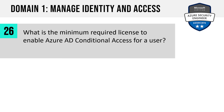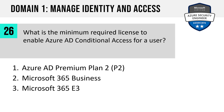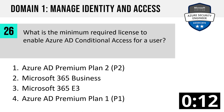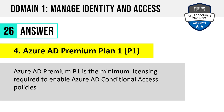Question 26. What is the minimum required license to enable Azure AD Conditional Access for a user? Azure AD Premium Plan 2, Microsoft 365 Business, Microsoft 365 E3, or Azure AD Premium Plan 1? Plan 1 and Plan 2 are sometimes abbreviated as P1 or P2. The answer is Azure AD Premium Plan 1. For the exam, if you see anything related to licensing, it will likely involve sorting out features in Plan 1 versus Plan 2. For example, Identity Protection only shows up in Azure AD Premium Plan 2, and Privileged Identity Management also requires Plan 2.